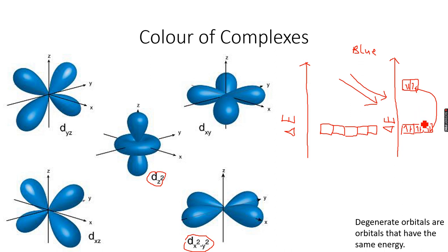That's how this happens. This energy gap corresponds to the red wavelength, and this is for octahedral complexes. This splitting is for octahedral complexes. Now that we know why we see this color, let's see what happens for tetrahedral complexes.